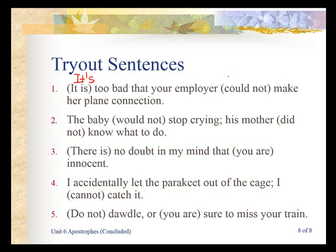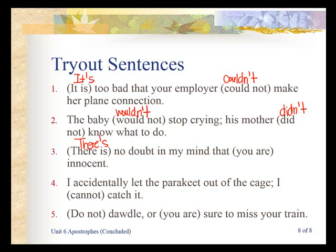'Could not' becomes 'couldn't' — C-O-U-L-D-N, we drop the O, so apostrophe goes there, then T. 'The baby wouldn't stop crying' — 'would not': W-O-U-L-D-N, drop the O, apostrophe, T. 'His mother didn't know what to do' — D-I-D-N, drop the O, apostrophe, T. 'There's no doubt' — T-H-E-R-E, drop the I, apostrophe, S. 'There's no doubt in my mind that you're innocent' — Y-O-U, drop the A, apostrophe, R-E.